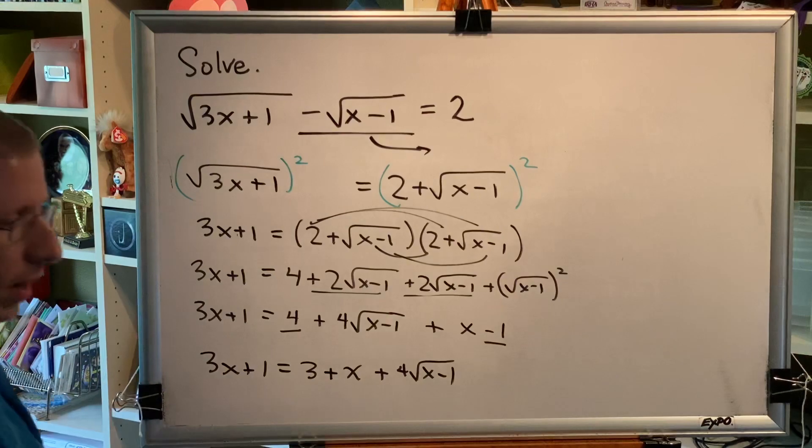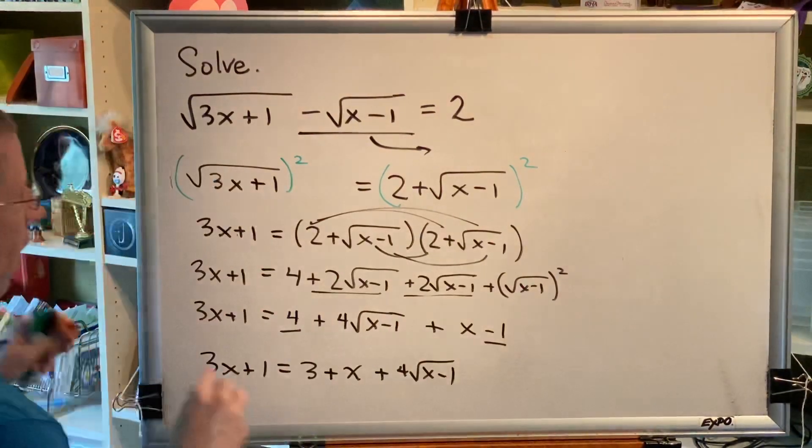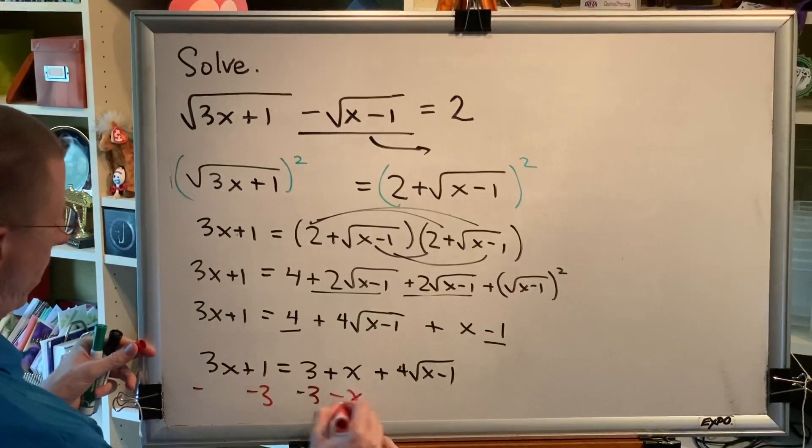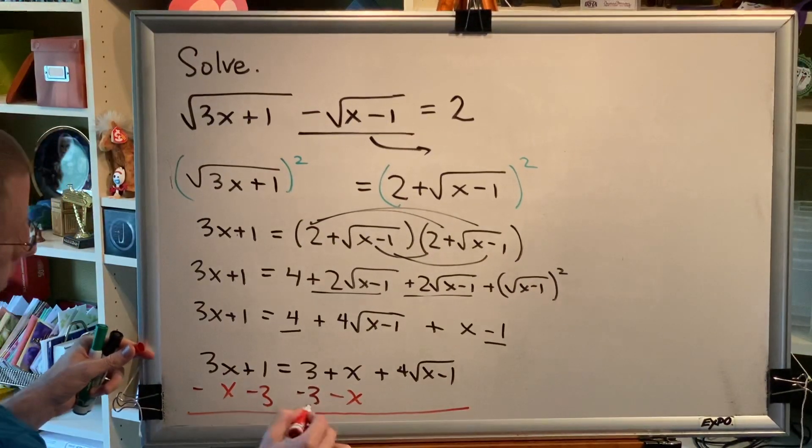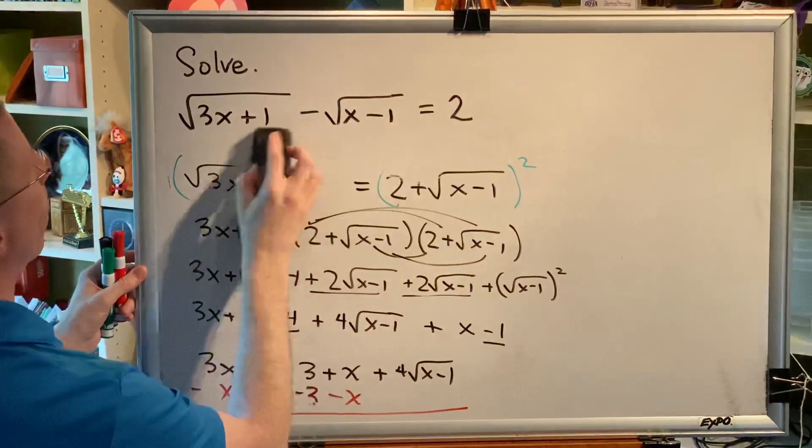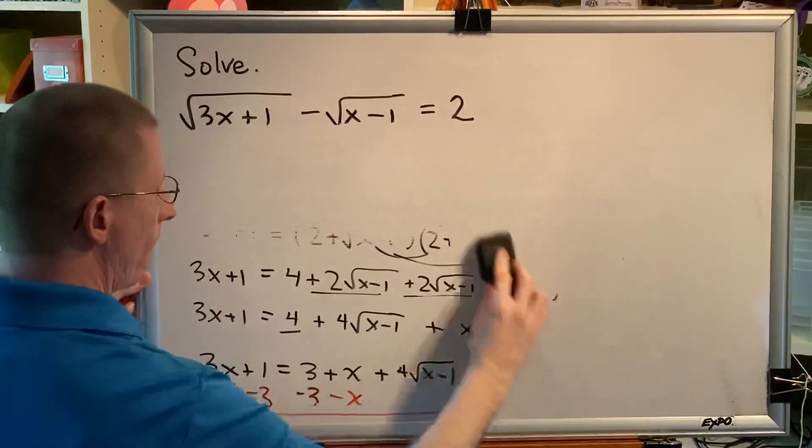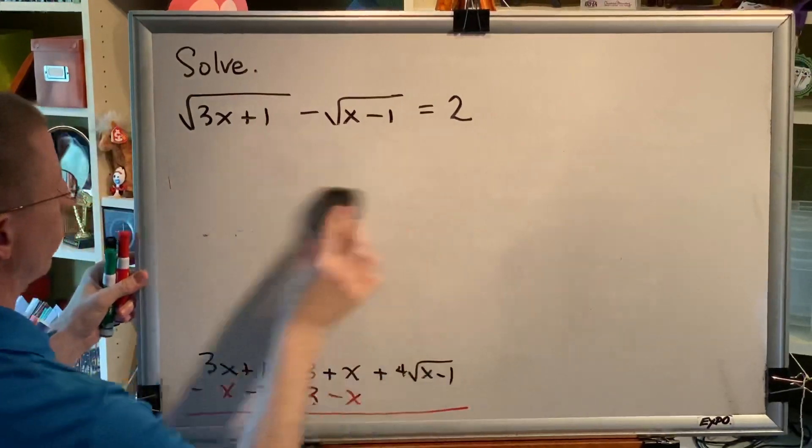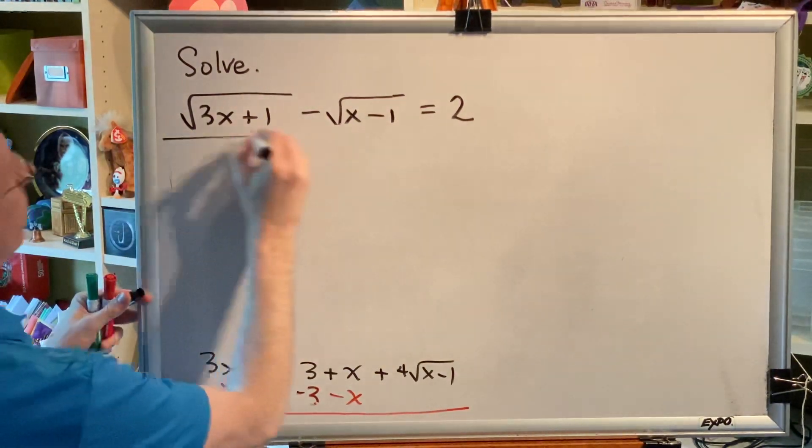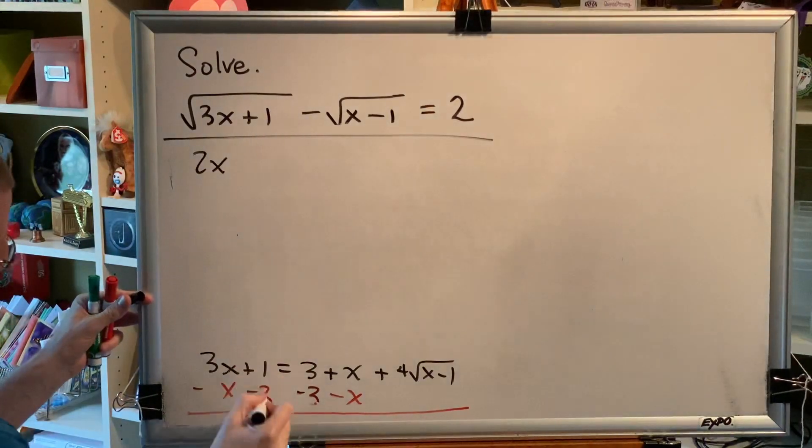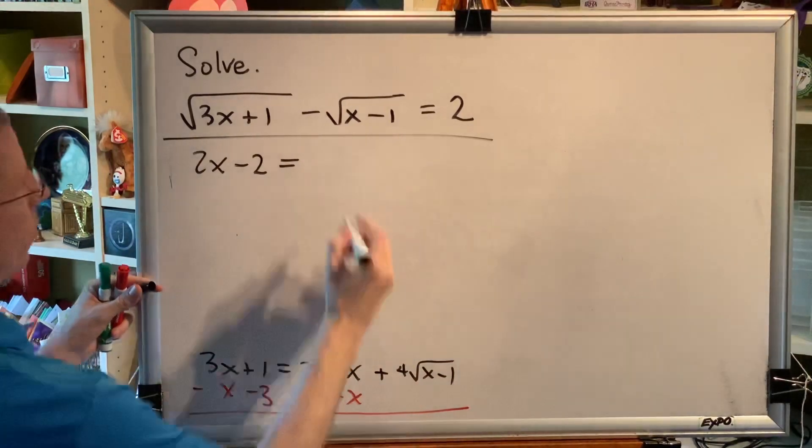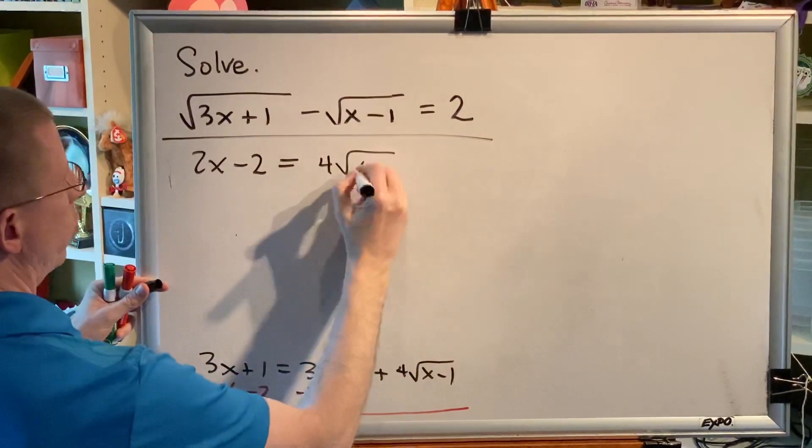I still have a radical in my equation, so I need to isolate it. And to do that, I have to get rid of both of these. So minus 3, minus 3, minus x, minus x. And we have 3x minus x is 2x, plus 1 minus 3 is minus 2, equals, for square root of x minus 1.